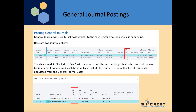When posting general journals we have a couple of options. Usually they will post straight to the cash ledger since no accrual is happening in the general journal. But we are allowed to exclude from cash, so if there are certain entries we don't want to see in the cash ledger we can check that option in the general journal and once we post it, it won't be posted to the cash ledger. This field is defaulted in from the journal batch, and in the journal batch you can set what the default value is.